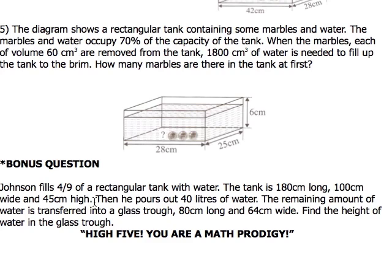Now then he pours out 40 liters of water. Why? I have no idea why, but he just pours out the water. Then he says that the remaining amount of water is transferred into a glass trough. You know what's a trough? It's like a long container, 80 cm long and 64 cm wide. What is that? You should know by now - length times breadth will give you the base area.